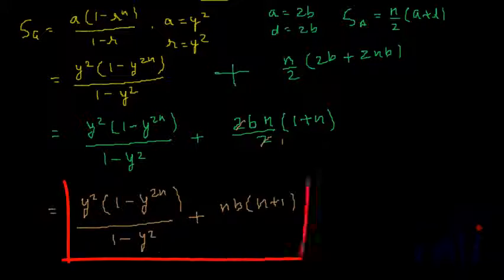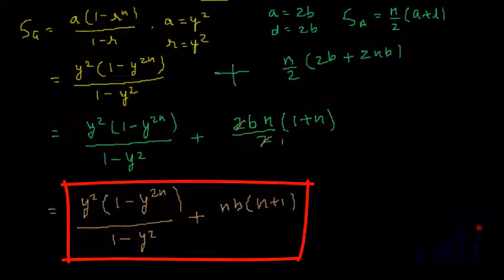So this is the sum of the pattern. We solved it by separating each term of the pattern such that one part of each term forms a geometrical progression and the second part forms an arithmetical progression. Then we applied the formula to find the sum of those two patterns, and this is what we get as the result.